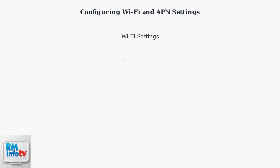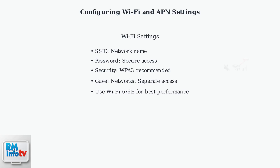Once logged in, configure Wi-Fi settings including network name, password, and security mode. WPA3 is recommended for encryption. Set up guest networks for visitors. For optimal performance, use Wi-Fi 6 or 6E if supported by your gateway.